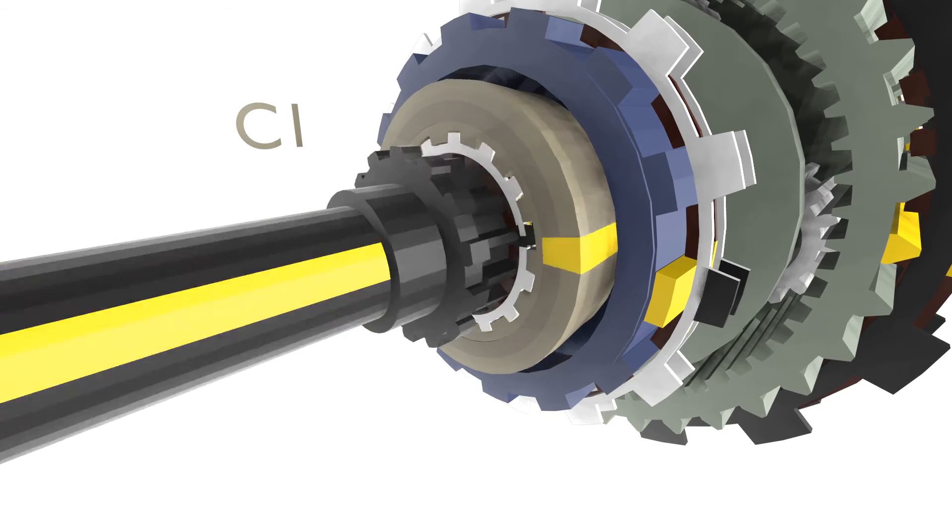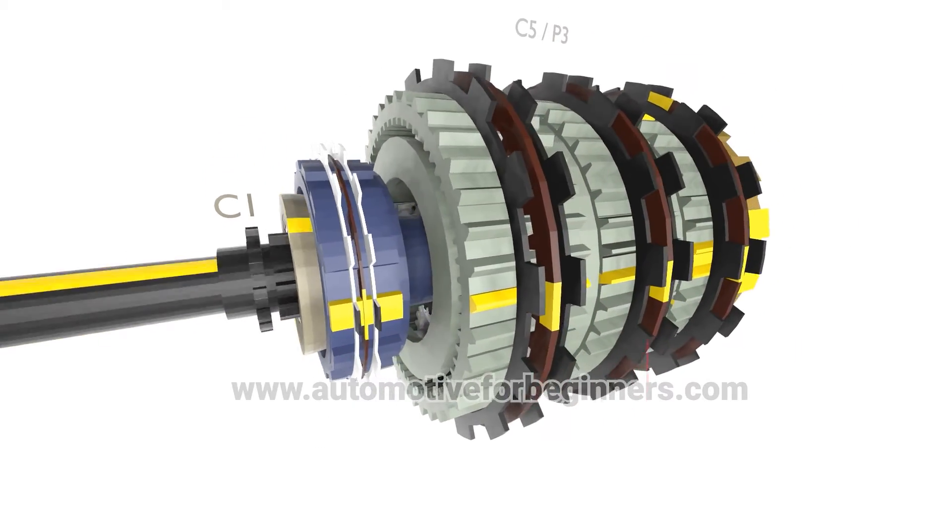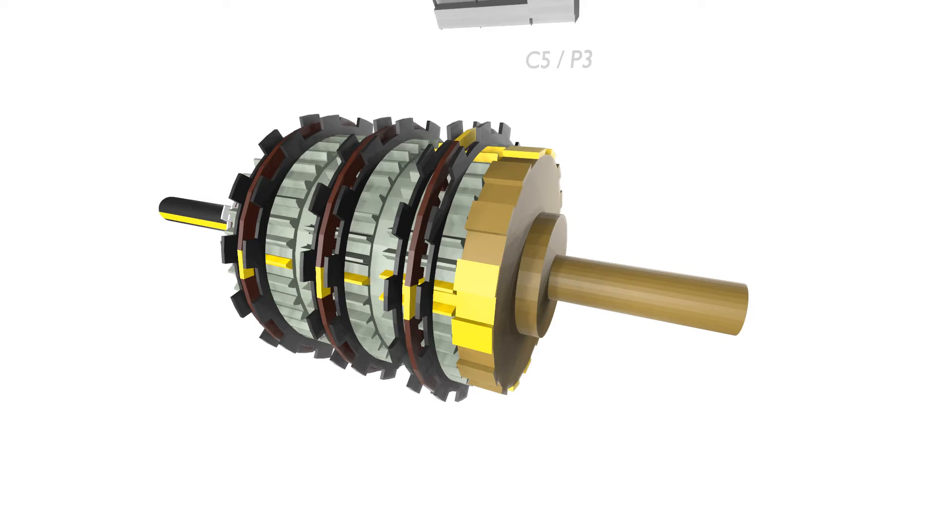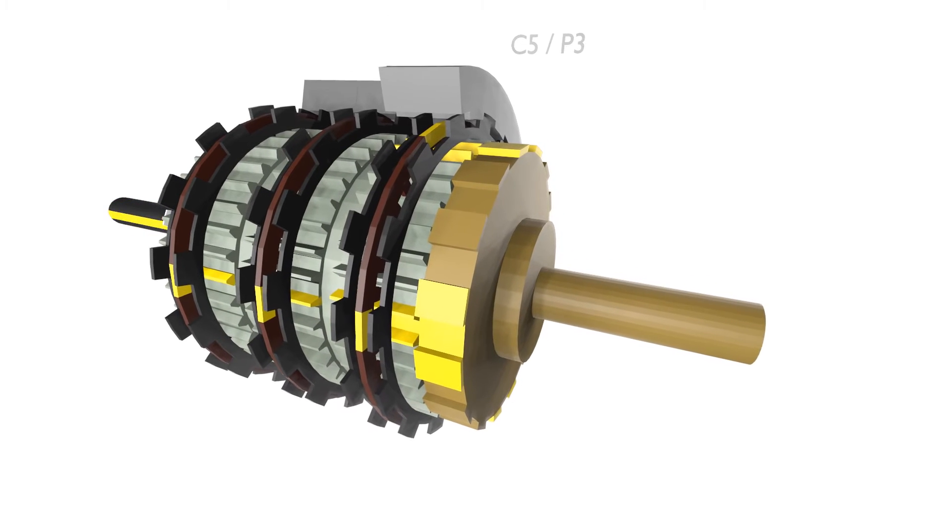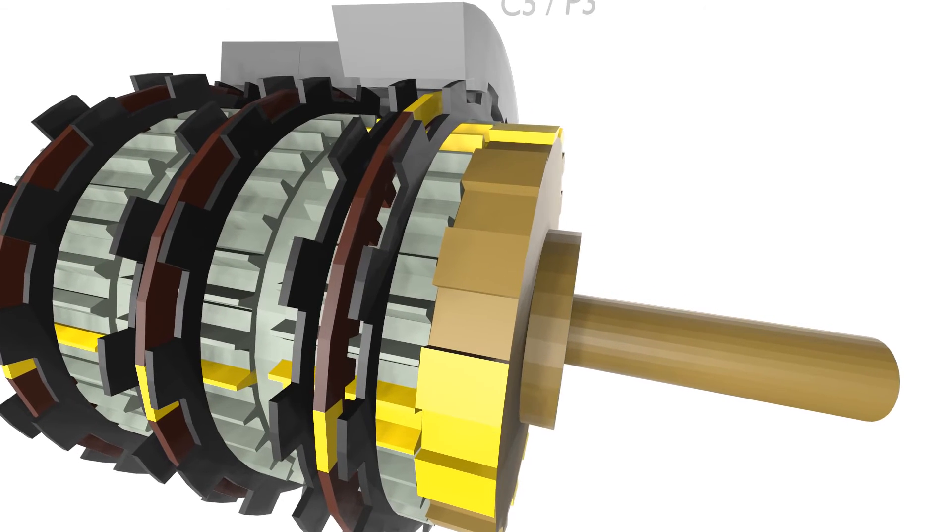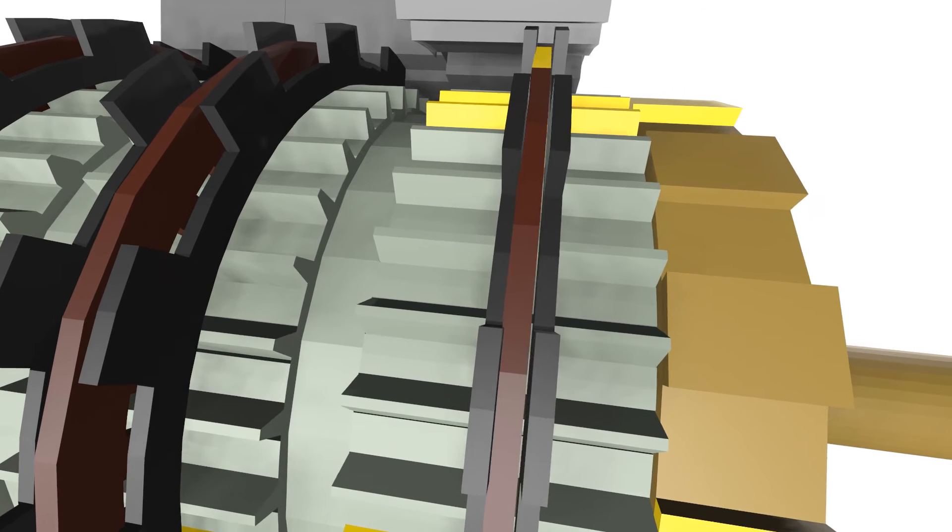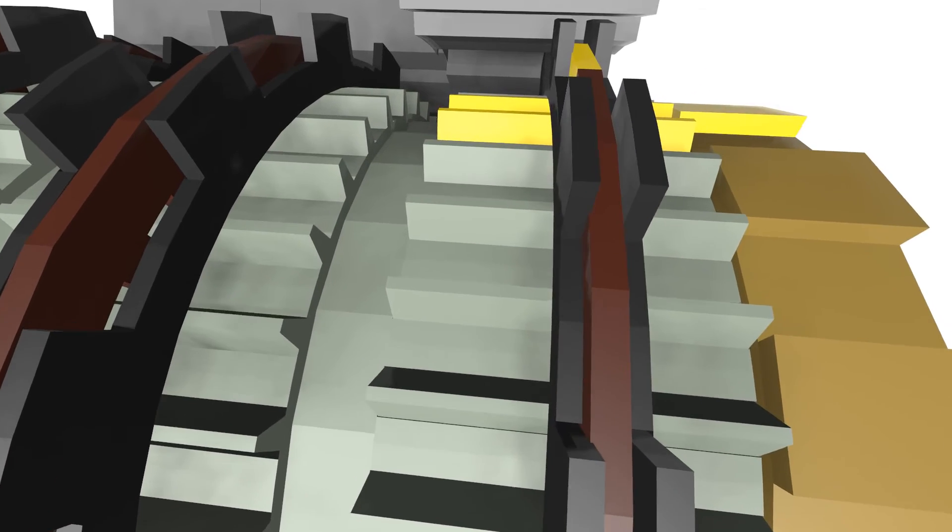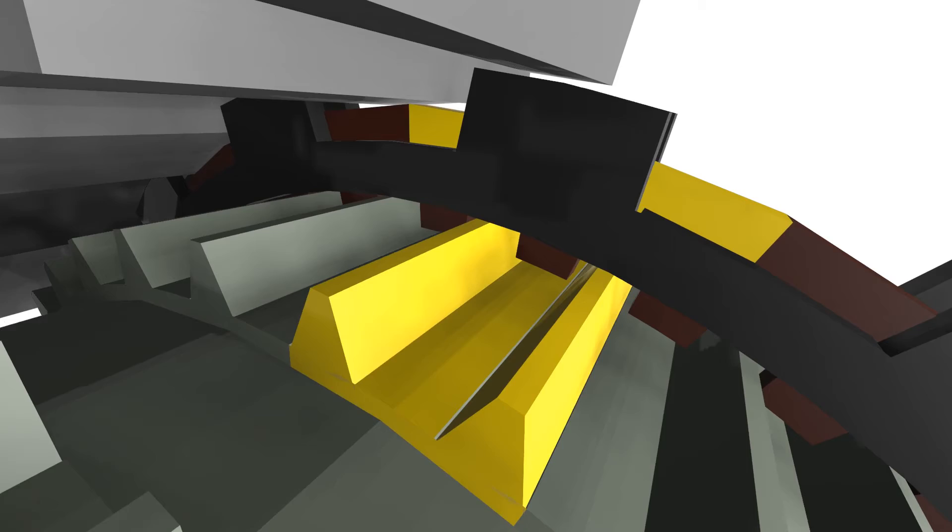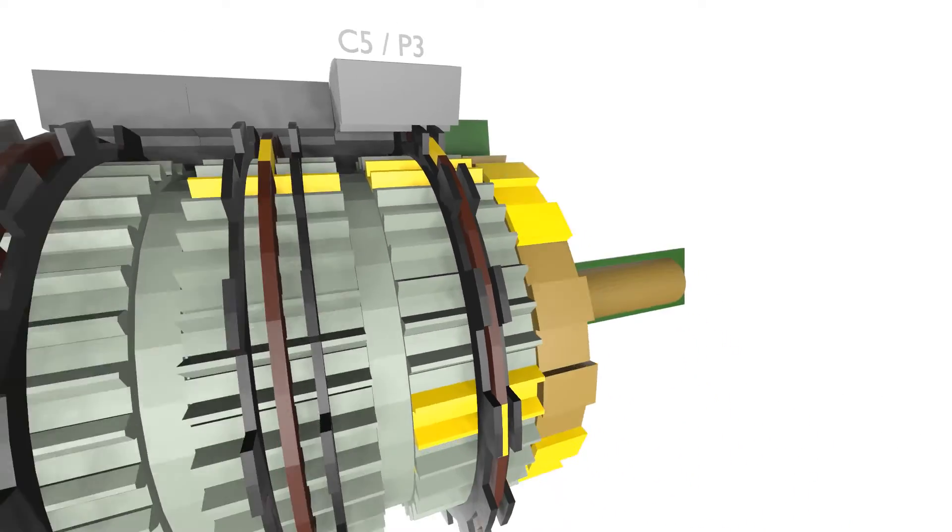It's time now to engage the C5 P3 planetary system. We must keep the C5 ring gear stationary this time. This time the steel discs for C5 are splined to the transmission housing. The C5 steel discs do not rotate. Using the clutch packs, the steel discs will close together and squeeze the clutch disc. Now the clutch packs are locked together here and will force the ring gear of C5 from rotating. This now locks the C5 P3 ring gear to the transmission housing. This completes first gear and now allows the output shaft to rotate and deliver speed to the wheels.